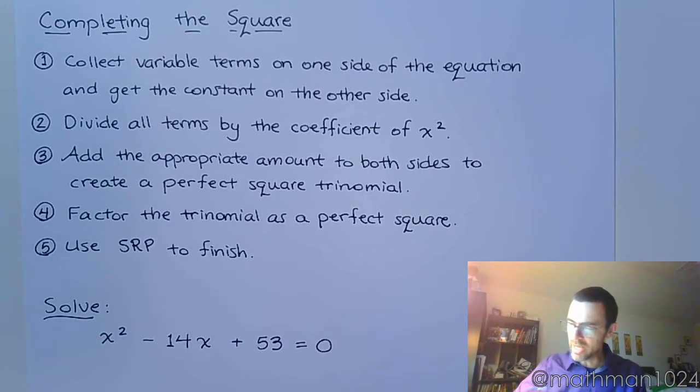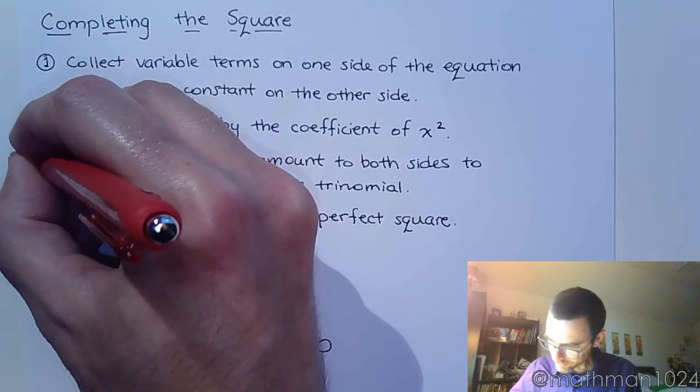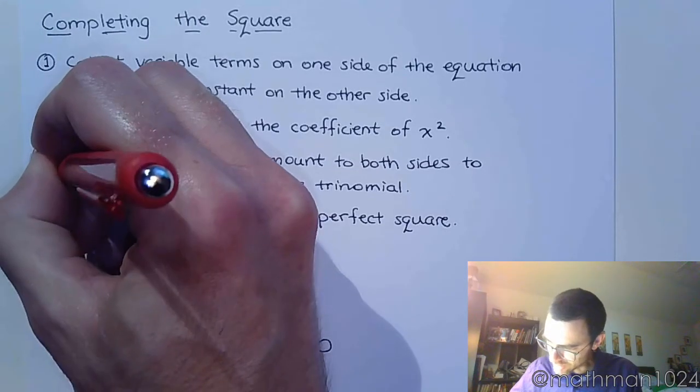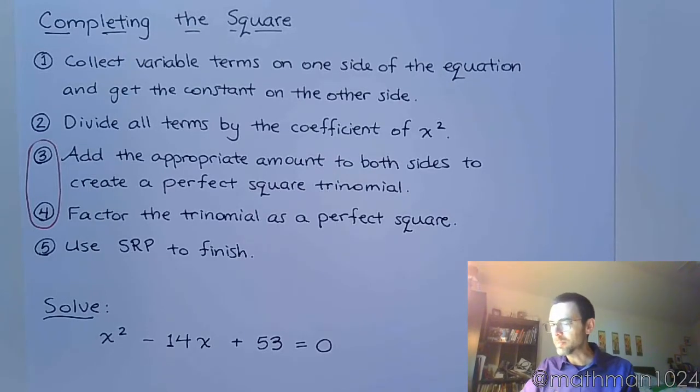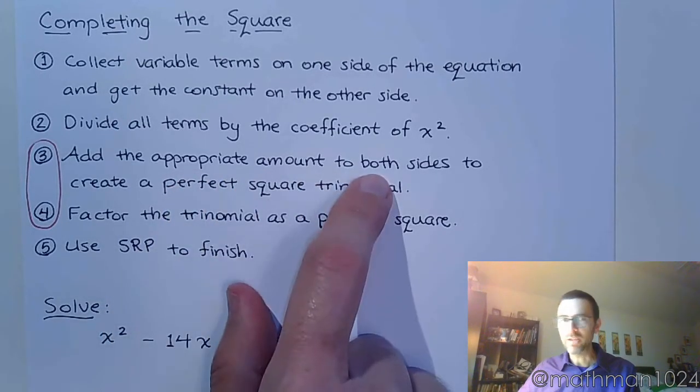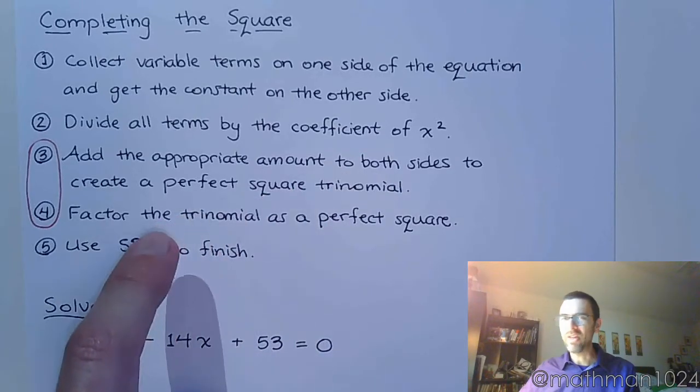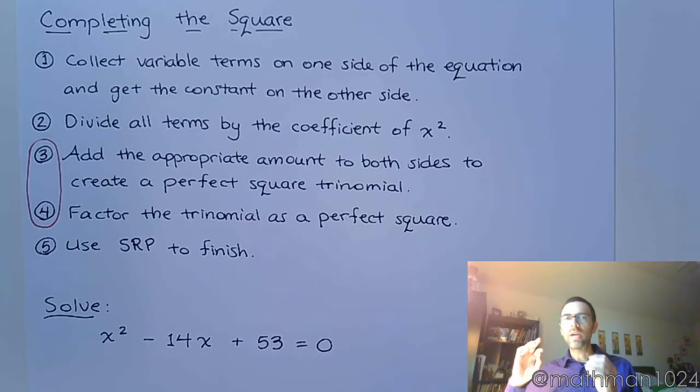Now, steps 3 and 4, I tend to do these guys together because they're so connected. Step 3 says to add the appropriate amount to both sides in order to create a perfect square trinomial. And then 4 says you're going to factor that trinomial as a perfect square. Well, if you know the amount you're going to add to both sides, that means you already know how that trinomial is going to factor. So I kind of do these guys together, which we're going to see here in just a moment.